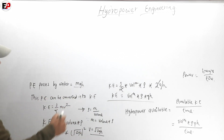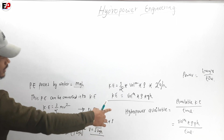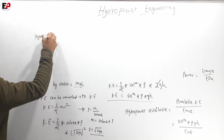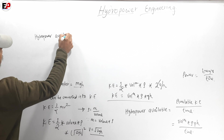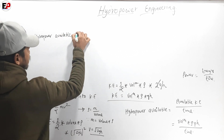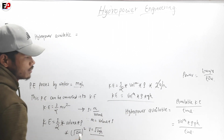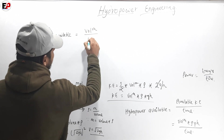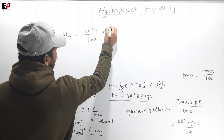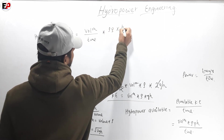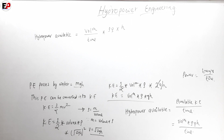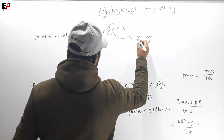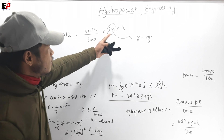Hydro power available equals available kinetic energy upon time. Taking the equation: volume upon time times rho times g times H. We know that rho times g equals gamma, so we replace rho·g by gamma. Volume divided by time has units of meter cube per second, which equals Q — the discharge.